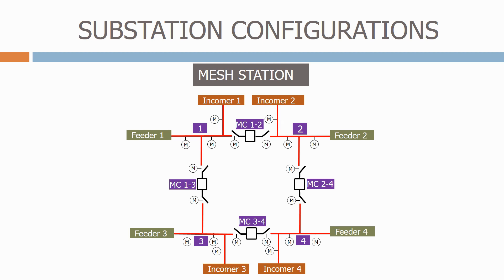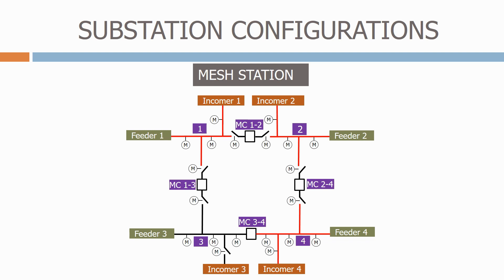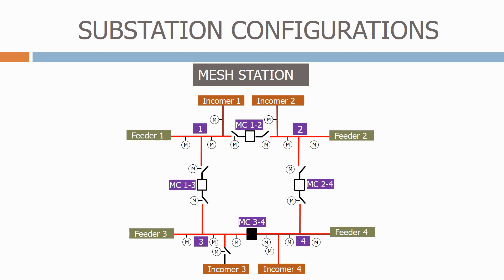If we lose the supply to an incomer, the system is automatically reconfigured using the circuit breakers and isolators. Because of the complexity involved, the control circuits and protection requirements for this type of station can be quite complex and difficult to maintain. This is why this arrangement is not as popular as it used to be.